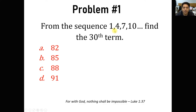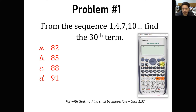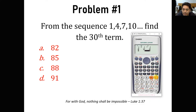We are going to find the 30th term using our calculator. The very first thing is: mode stat — that's mode 3 — then select a plus bx, number 2. We are going to have a table of x and y. Input the first two terms: x equals 1 with value 1, and the second term with value 4. Once we have inputted our values, press AC.